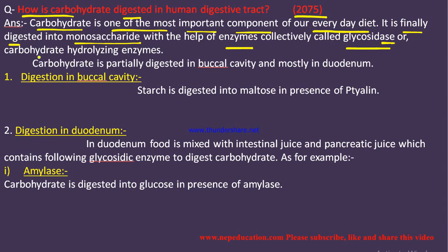Now, where does carbohydrate digestion begin? Carbohydrate is partially digested in the buccal cavity and mostly digested in the duodenum, which is part of the small intestine.